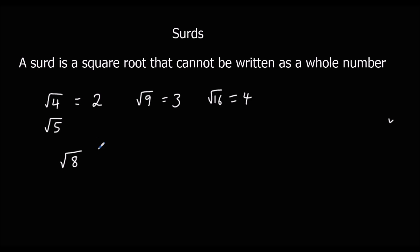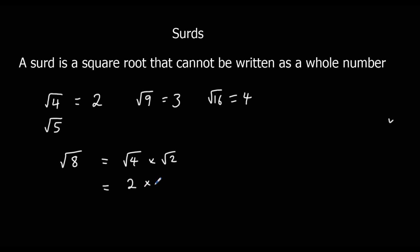Square root 8 is a surd because it doesn't go to a whole number, however it isn't in its simplest form because square root 8 can be written as a smaller square root. Square root 8 is square root 4 times square root 2. Square root 4 is actually 2, so square root 8 is 2 lots of square root 2, which can be written as 2√2. This is in a simpler form because the surd is smaller.